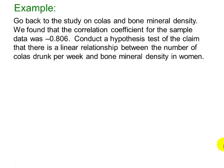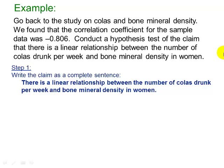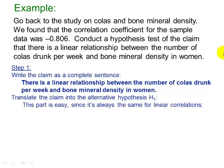Let's do an example. Going back to our study on colas and bone mineral density, we found that the correlation coefficient R for the sample data was negative 0.806. We're going to use that to conduct a hypothesis test of the claim that there's a linear relationship between the number of colas drunk per week and the bone mineral density in women. Step one is to write our claim: there is a linear relationship between the number of colas drunk per week and bone mineral density in women. We're going to translate this into our alternative hypothesis.